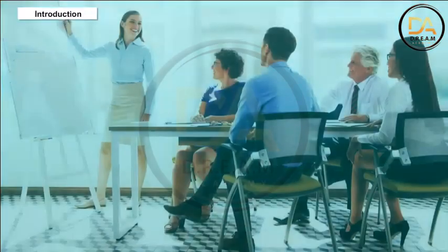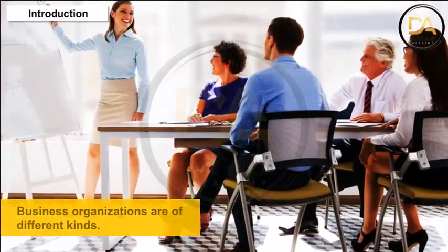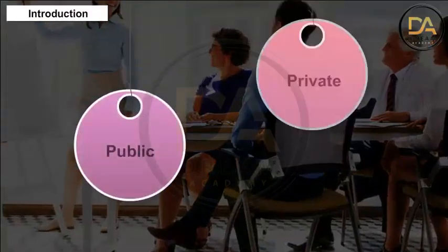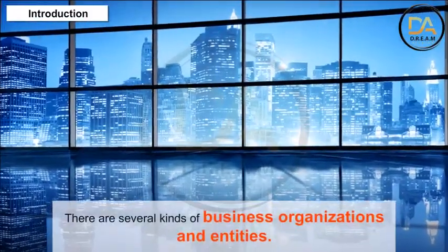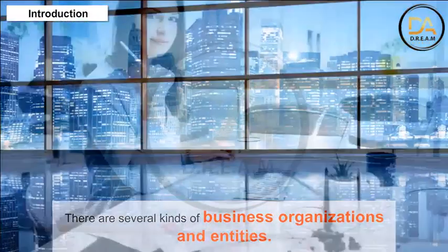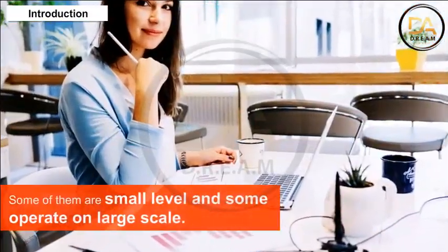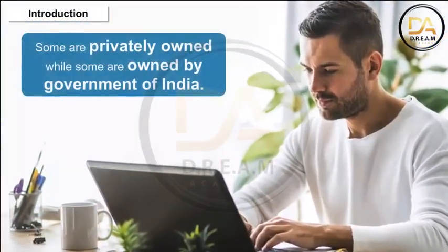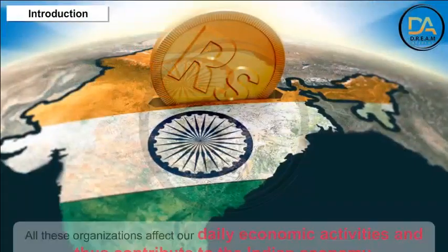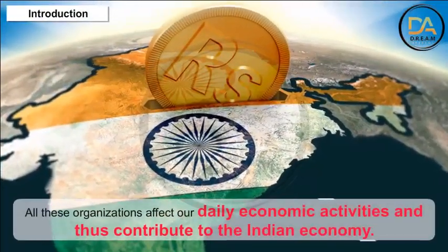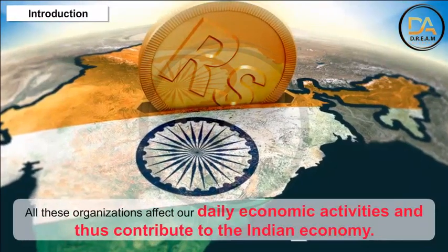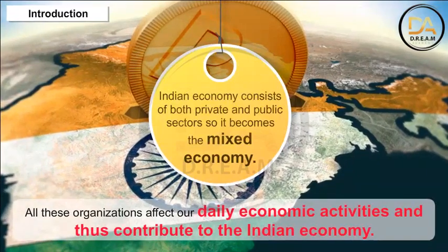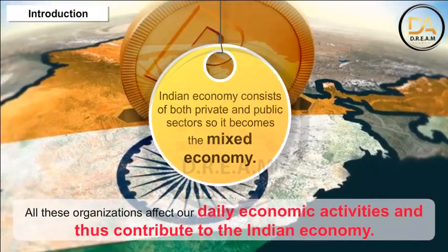Introduction. Business organizations are of different kinds. The economy is divided into two different sectors: public and private. There are several kinds of business organizations and entities. Some of them are small level and some operate on large scale. Some are privately owned while some are owned by the government of India. All these organizations affect our daily economic activities and thus contribute to the Indian economy. Indian economy consists of both private and public sectors, so it becomes a mixed economy.